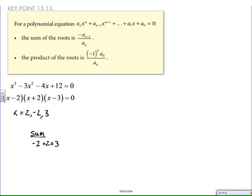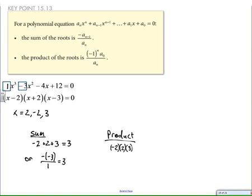If we extend this idea into any polynomial, in this case I chose a cubic, but this works for any degree. I deliberately designed it to be factorable so I can find the actual roots. If I add the roots together, I get 3, and if I take the opposite of negative 3 over 1, I get the sum of the roots. If I multiply the roots together, I get negative 12, which equals the opposite of 12 over 1.